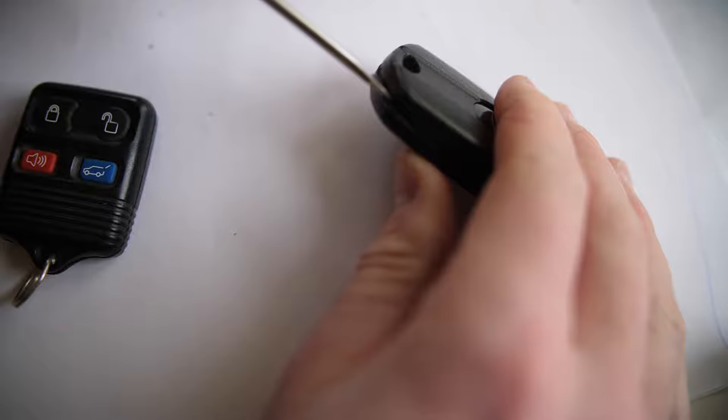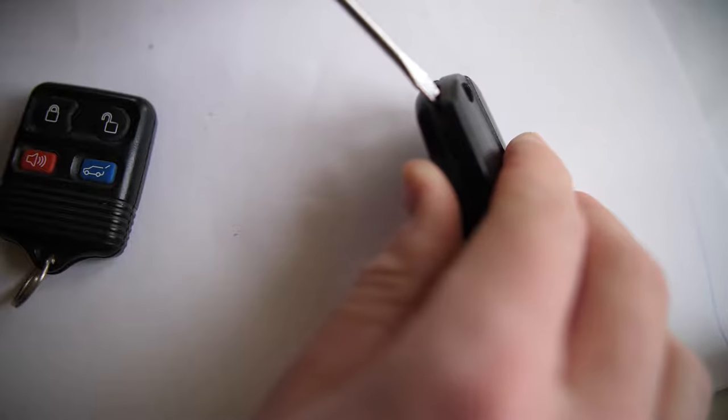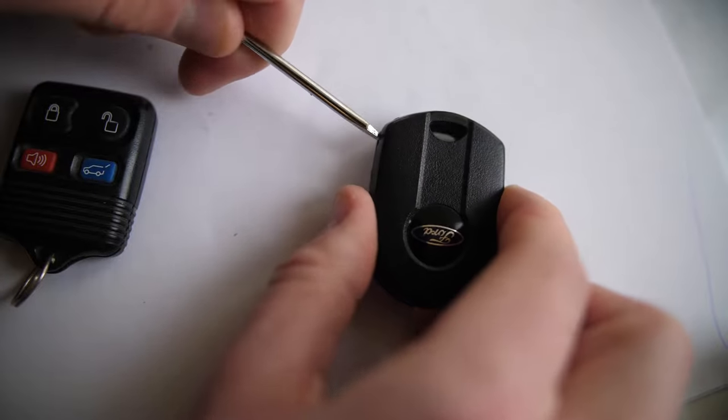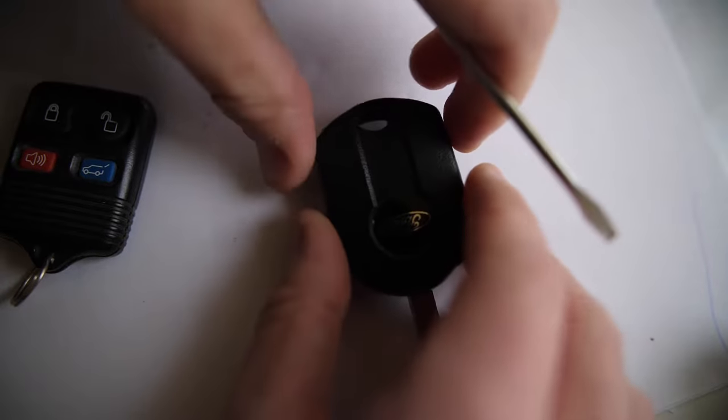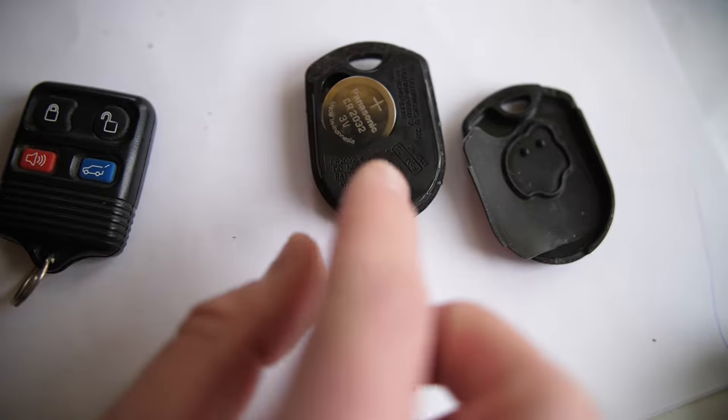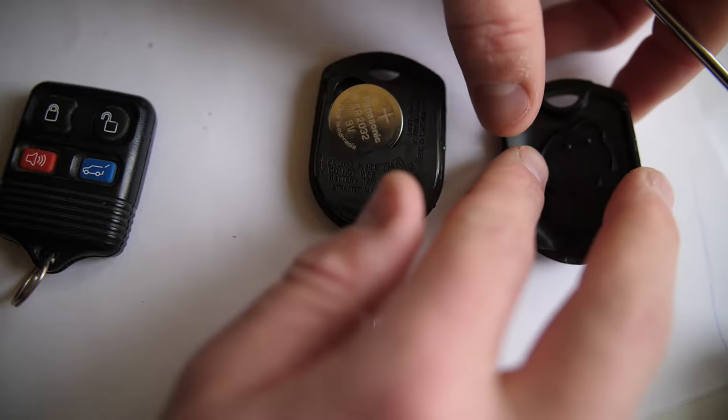And in this one, there's actually a little bit of a larger area here. So look on the key, if there's any indentation, you can kind of get some leverage in there and just kind of slowly pry apart this key. And boom, there you go, you get access to this 2032 replaceable battery.